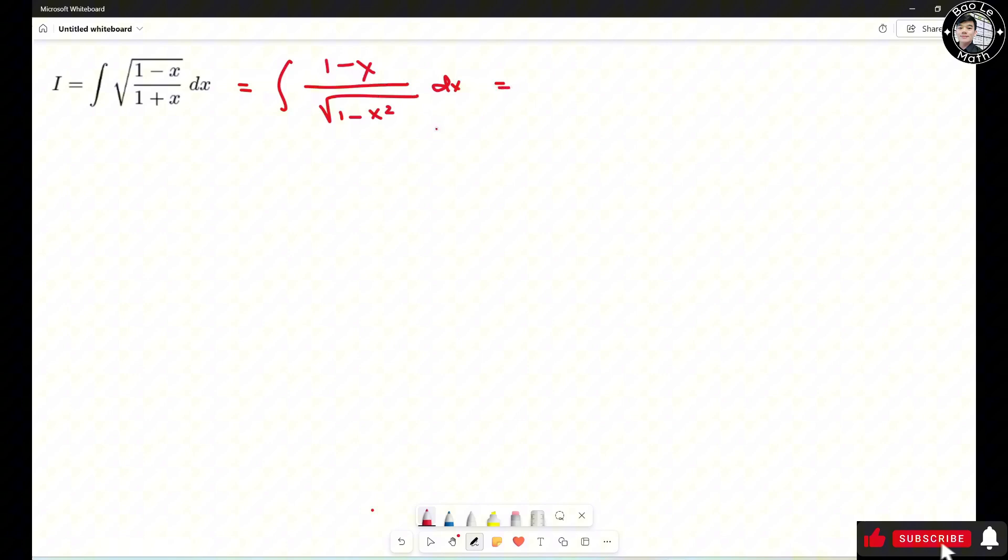Now I'm going to split this integral into two integrals. So it could be integral of 1 over square root of 1 minus x square dx minus integral of x over square root of 1 minus x square dx.